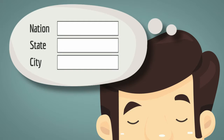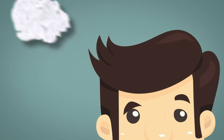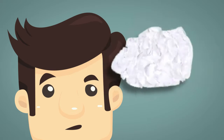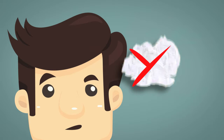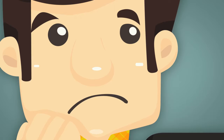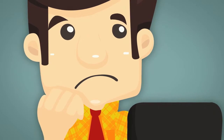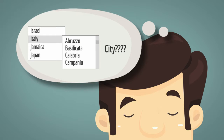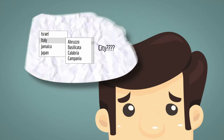Let's see — I could use three text fields, but that's not user-friendly enough. I could use three select lists, but then there would be no correlation within the values, and the user could select Africa, Kansas, London. Okay, what if I use a two-level cascading select? Yeah, right — and then how do we add in the city?